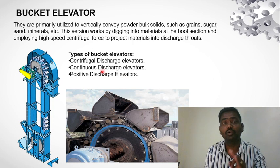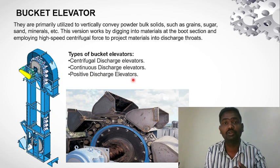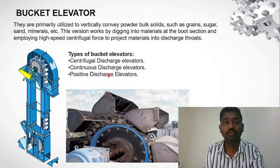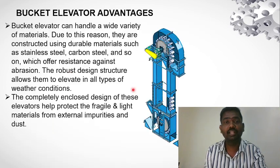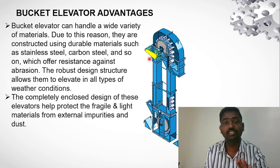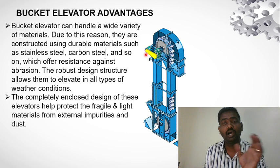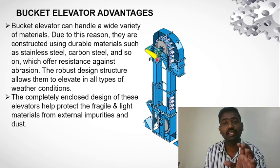There are different types of bucket elevators. The main types are: centrifugal discharge, continuous discharge, and positive discharge. The drive is located at the head section, at the top of the elevator.